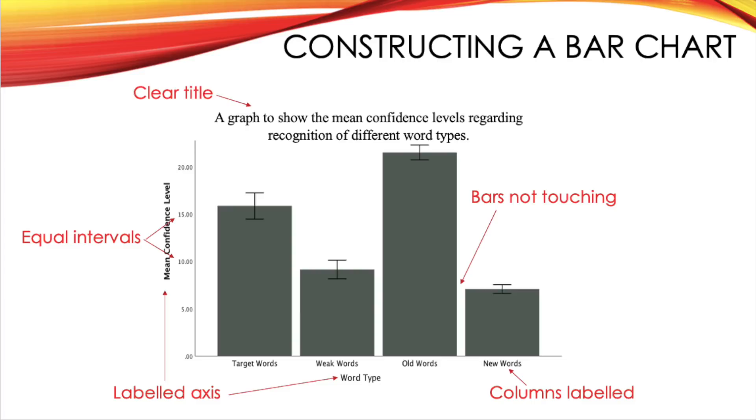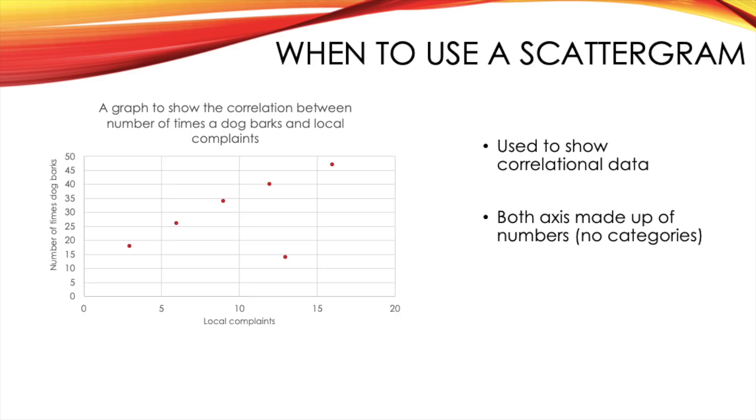Next we have scattergrams. When do you actually use a scattergram? A scattergram is used to show correlational data. You also use a scattergram when both axes are going to be made up of numbers, so there's no categories here.